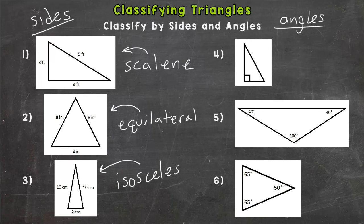Alright, number four, let's go to classifying by the angles. For number four, on the bottom left-hand angle you see a little box there. Whenever you see that, that means you have a 90 degree angle in that triangle. If the triangle has a 90 degree angle, you call it a right triangle.